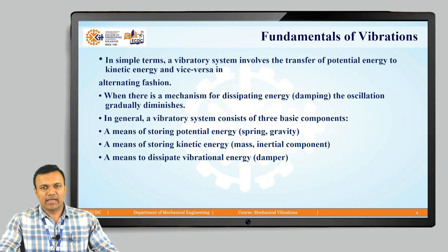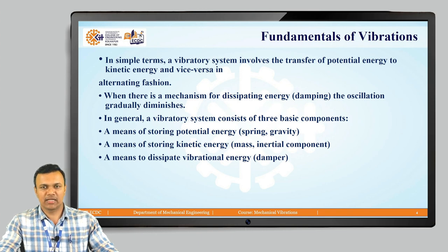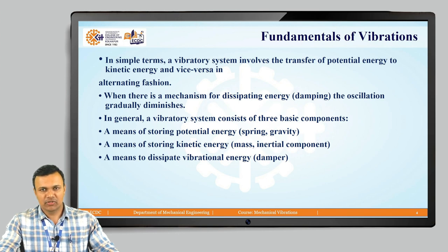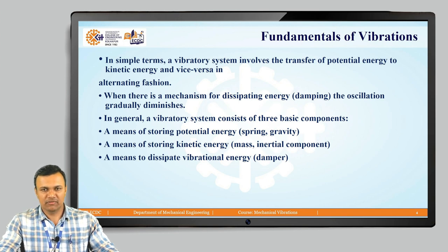A vibratory system comprises three basic components. The first is the spring or gravity, which stores potential energy. The second is the mass or inertial component, which stores kinetic energy. The third is the damper, which dissipates the vibrational energy. These are the three main components of any vibratory system.